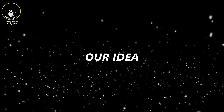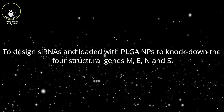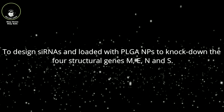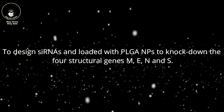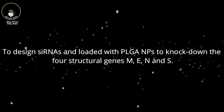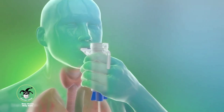Our idea to cure this coronavirus is by using siRNA loaded with PLGA nanoparticles to knock down the four structural proteins called M, E, N, and S. The siRNA is mixed with the PLGA nanoparticles. After sonication, it forms a primary and secondary emulsion, and on solvent evaporation, it forms a powder.